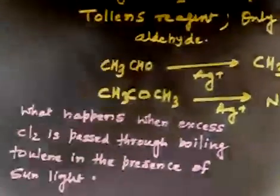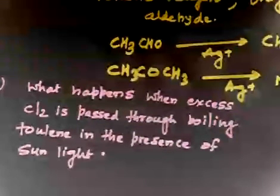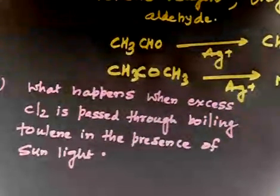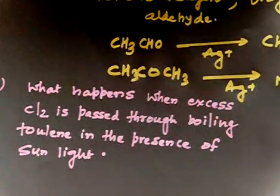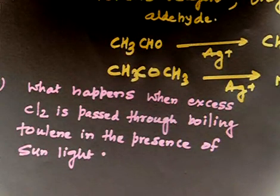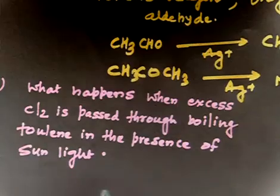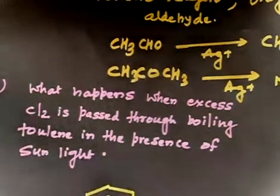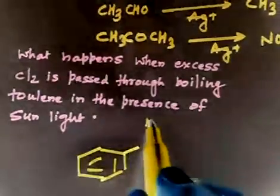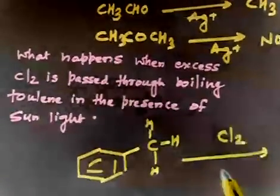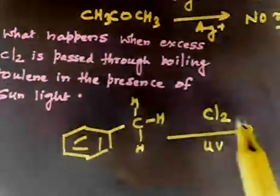Now let's discuss this next problem. What happens when excess Cl2 is passed through boiling toluene in the presence of sunlight? Now see, if you have excess Cl2 in the presence of sunlight, toluene is this molecule. Now you have to treat this with Cl2 in the presence of sunlight. Now see, can this chlorine go into the ring?